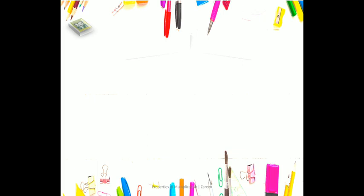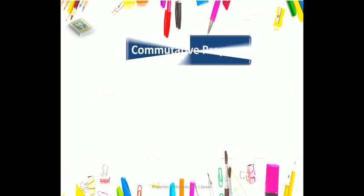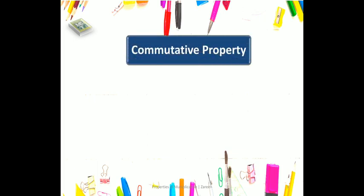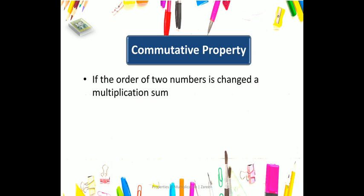The commutative property of multiplication states that if the order of two numbers is changed in a multiplication sum, the product remains the same.